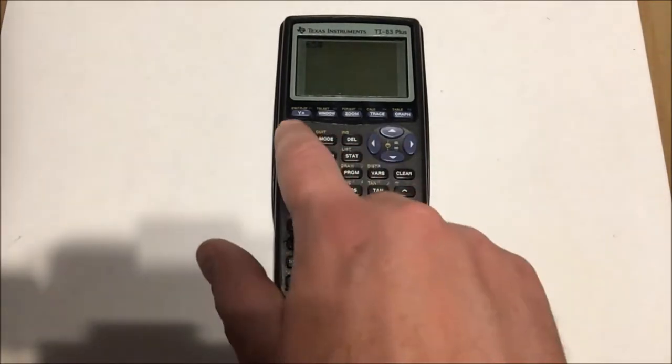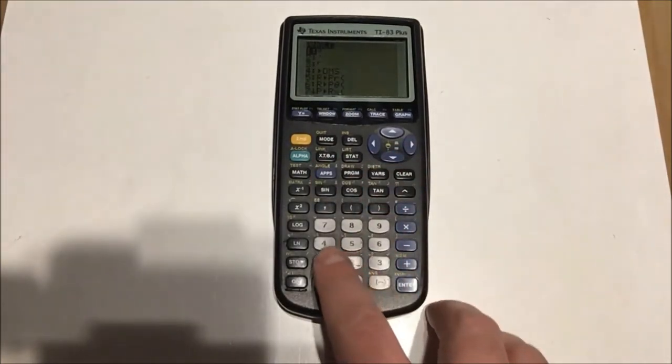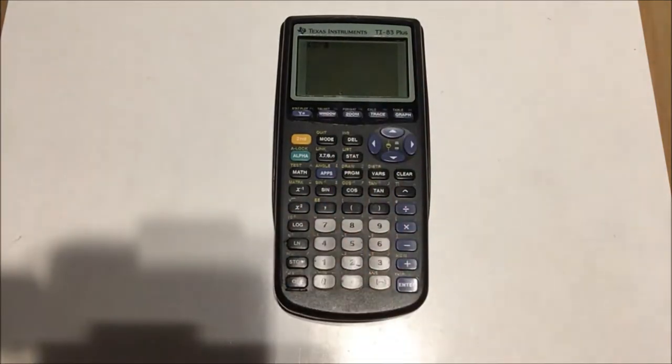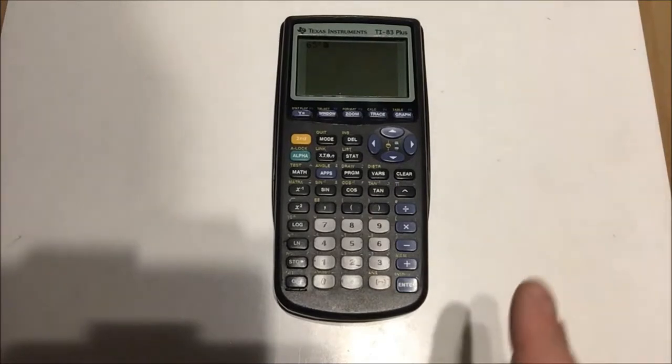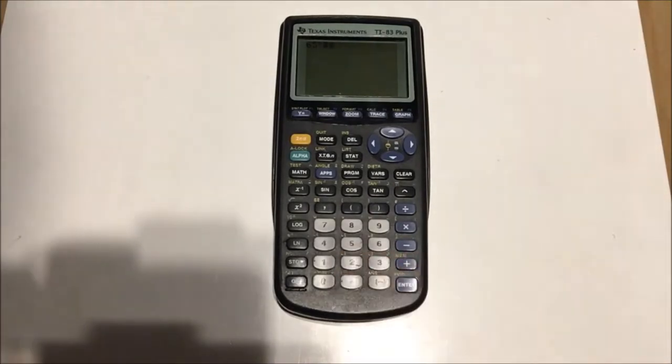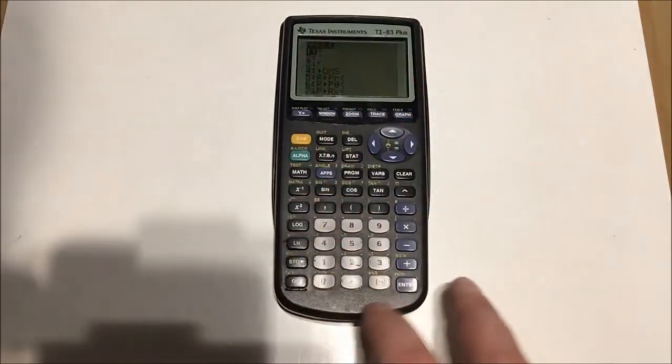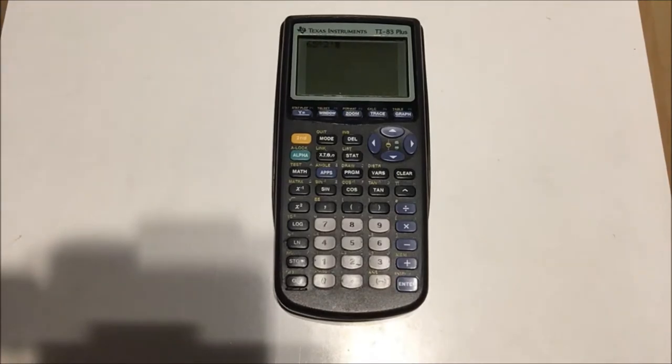Then I go to that same menu where I found DMS, second apps, and I press this time number 1. See that little angle, that little degree symbol? So now I have 65 degrees. Now what I'm going to do is type 2 because I have 2 minutes. I'm going to go to that same menu, second apps, and press number 2 for that little apostrophe, that little single quote. That means 2 minutes on this calculator.